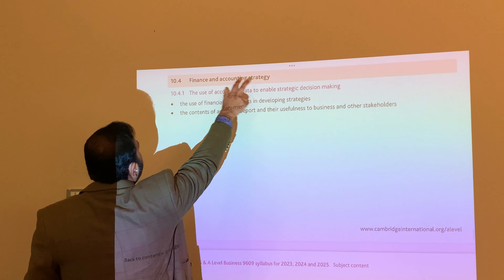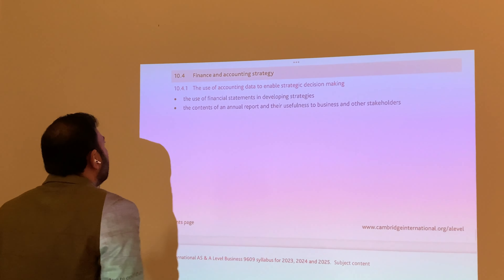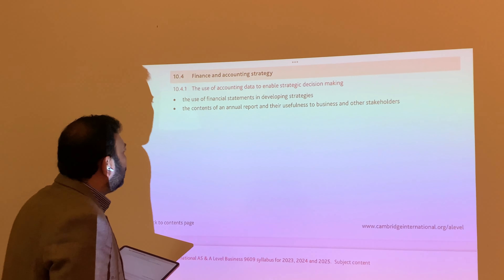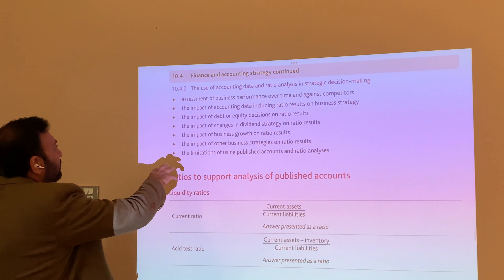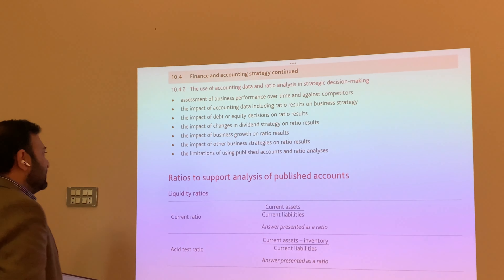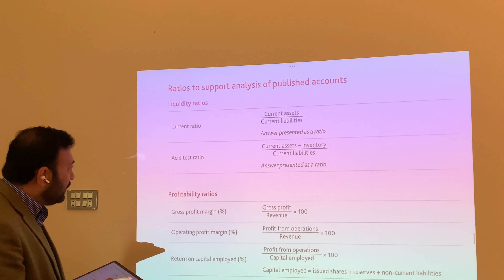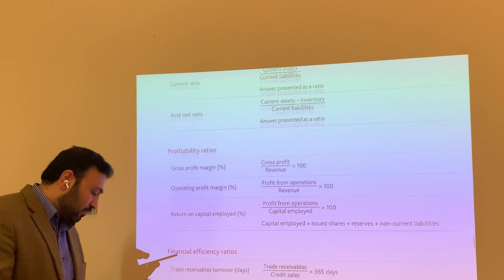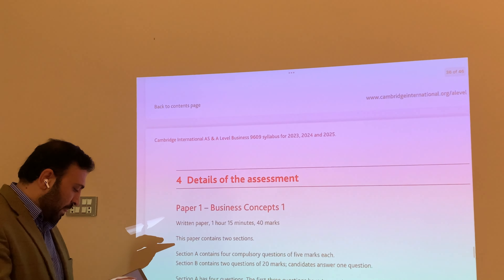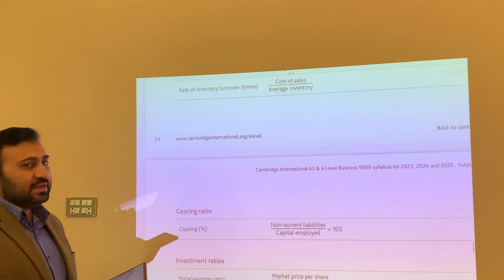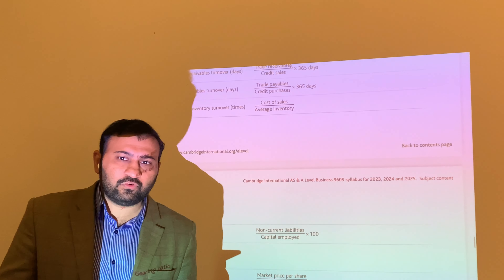There is a topic for financial and accounting strategy — 10.4 — the use of accounting data to enable strategic decision making, the use of financial statements in development of strategies, and the content of annual reports and their usefulness. This continues with financial accounting strategies: the impact of debt and liquidity on decision making. These are the things we have to specially focus on to teach the 2023 syllabus. The examiner has provided formulas to be used — trade receivable, trade payables, investment ratios, and all that. Thank you very much for listening. In the next video, I will open the mark schemes of these four papers in front of you and we will talk about them.